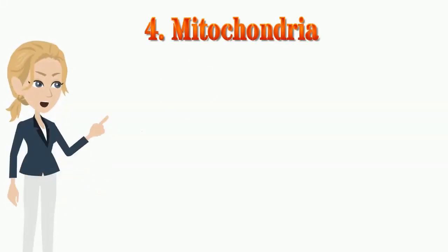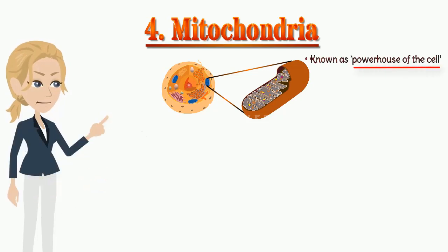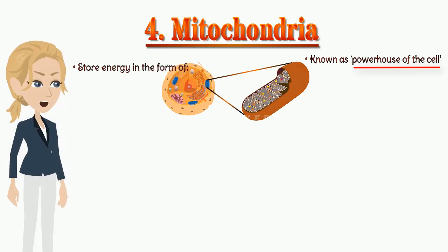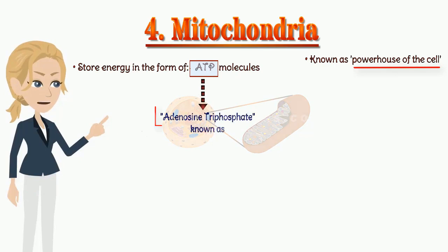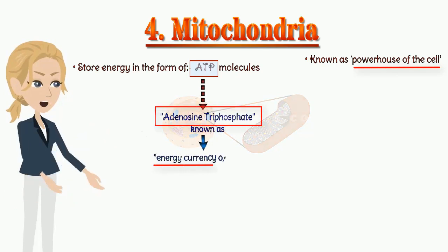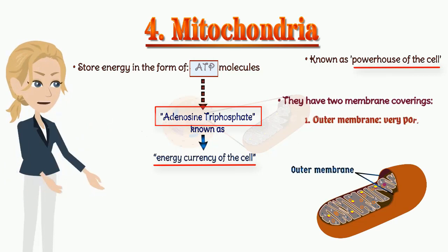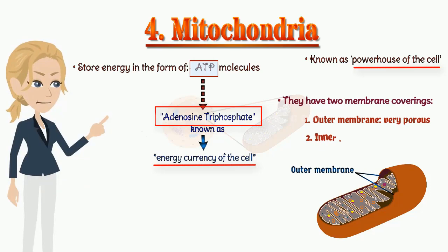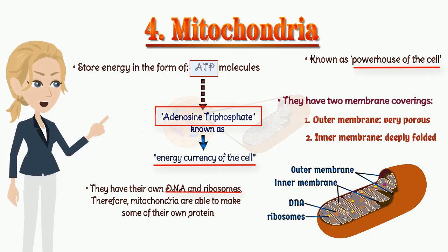We are going to study about mitochondria. Mitochondria are known as the powerhouse of the cell. They store energy in the form of ATP molecules. ATP stands for adenosine triphosphate, known as the energy currency of the cell. They have two membrane coverings instead of just one. The outer membrane is very porous, while the inner membrane is deeply folded. They have their own DNA and ribosomes, therefore mitochondria are able to make some of their own proteins.